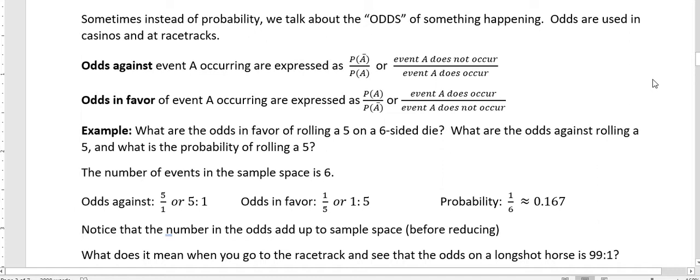And so example, what are the odds in favor of rolling a five on a six-sided die? And what are the odds against rolling a five? And what is the probability of rolling a five? Those are three different things.